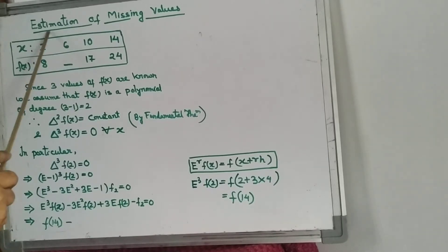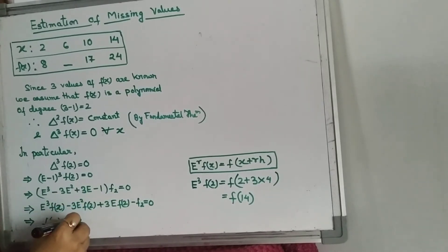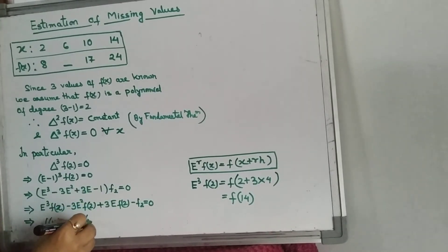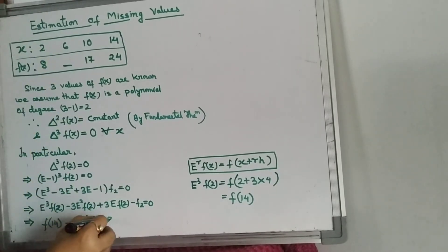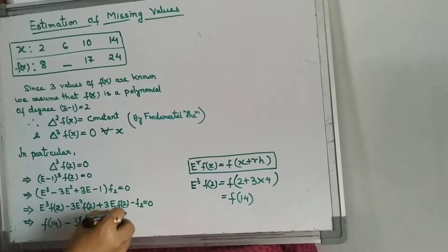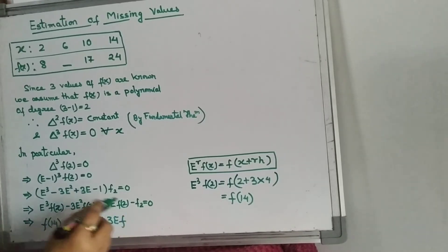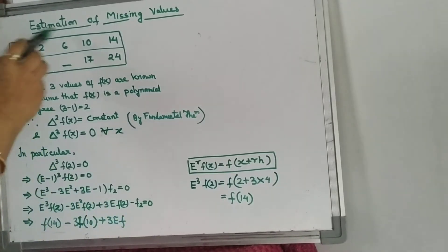f(2) is here, so it will jump from here to here and then here. So it will become minus 3f(10), plus 3E f(2). This will jump one time, so it will become f(6).